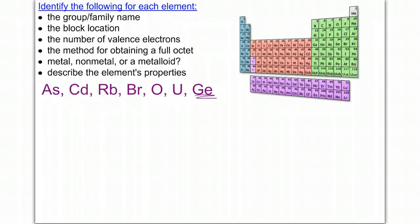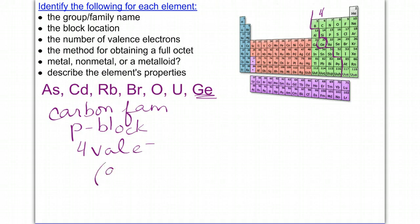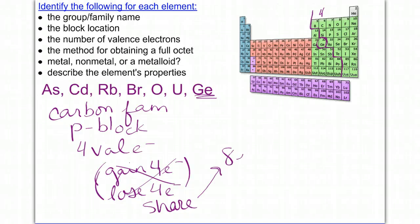Last is germanium, which is Ge, and again, it's going to be on the staircase. Here's our staircase one more time. So it is located in group number four, which is the carbon family. It's in the P block. It has four valence because it's in group number four, and this can actually do one of two things. It could gain four electrons, or it could lose four electrons. And that being said, it actually will do neither. It's going to typically want to share electrons, and we'll find that out more later when we get to chapter six, which is bonding. So to get its full octet, it's going to end up sharing four electrons to get eight valence.